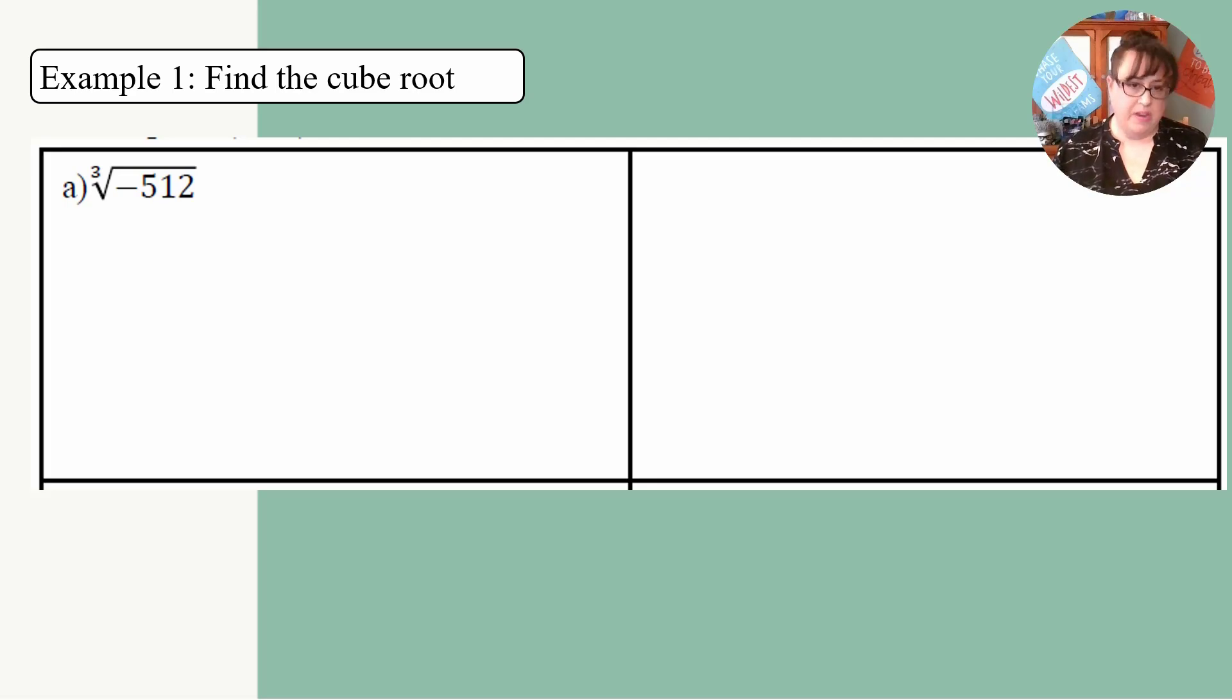So what happens when I have a negative number? Well, we need to be really careful as what happens. Because our answers, the things that we're multiplying, need to be exactly the same. So I have 512. And you know what? I know that 512 is divisible by 2. And that's about it. So 2 times 256.